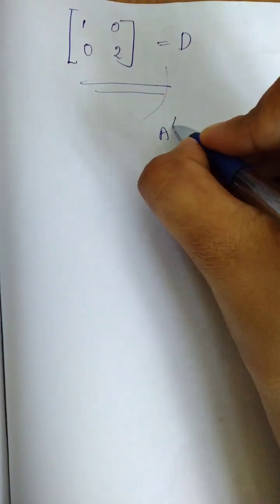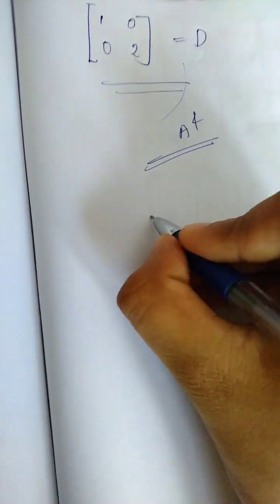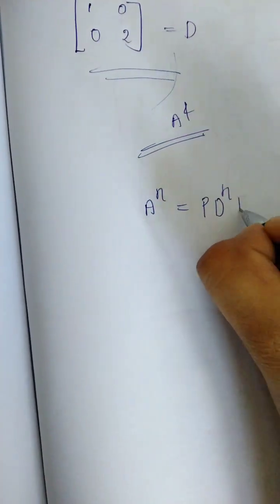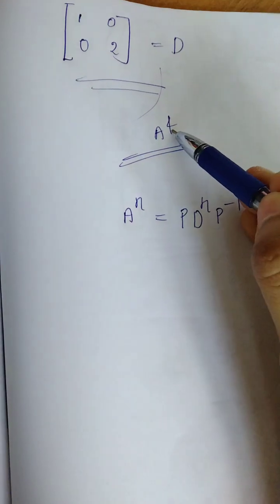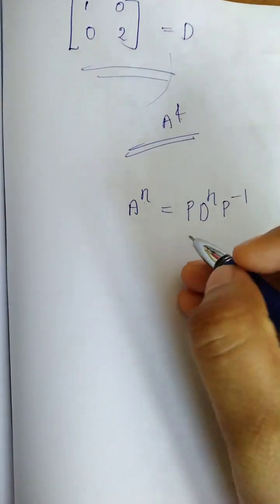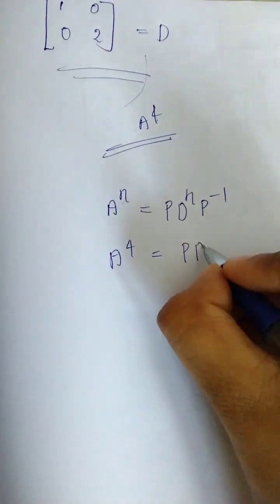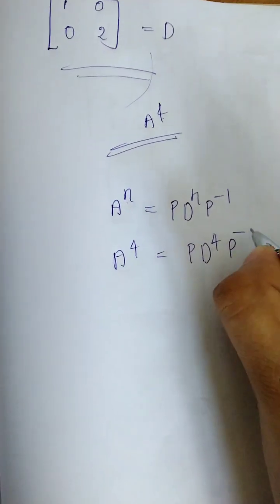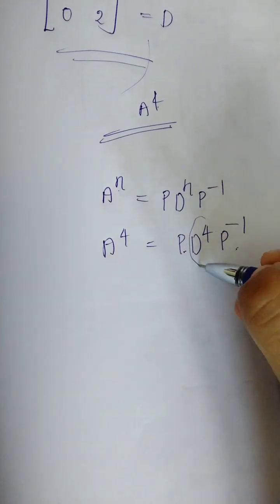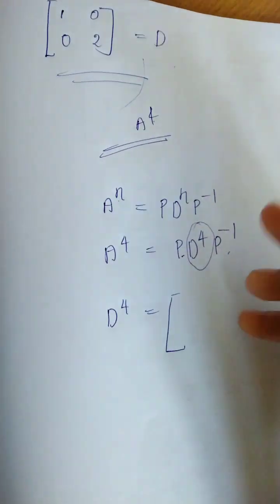If there is a question asking for A raised to 4, we use A raised to n equals P times D raised to n times P inverse. The question is A raised to 4, so A raised to 4 equals P times D raised to 4 times P inverse. We then multiply out D raised to 4 with P and P inverse.